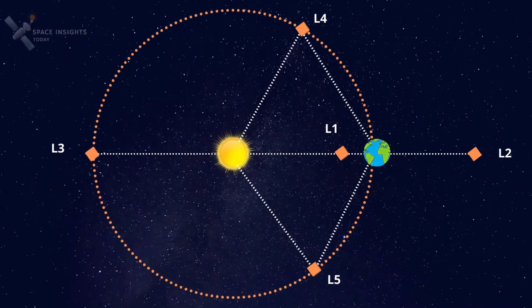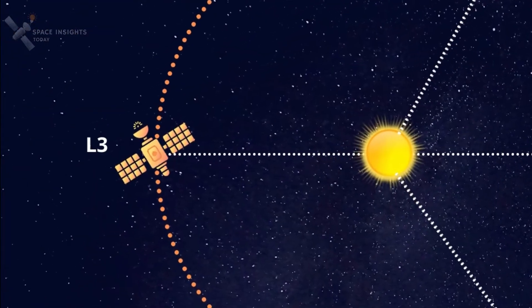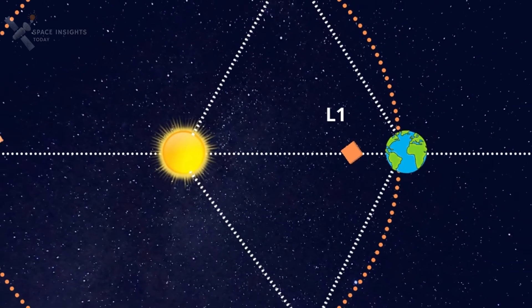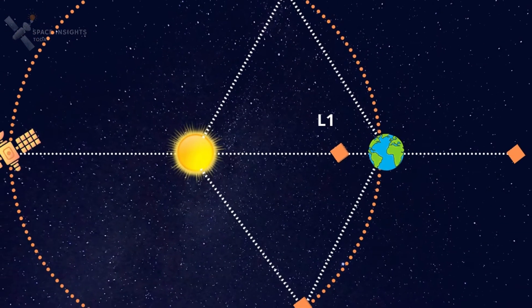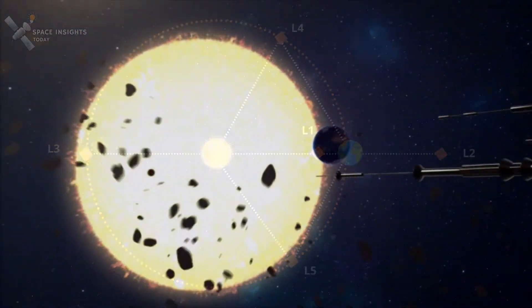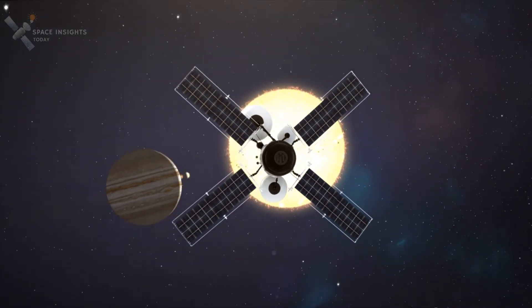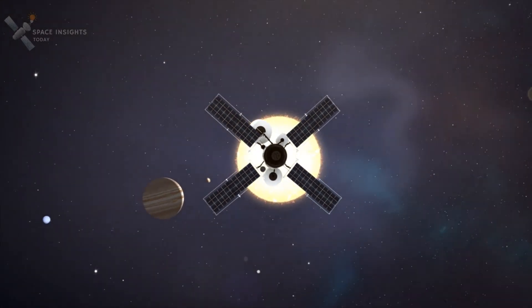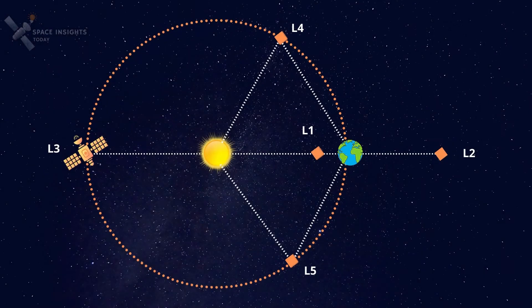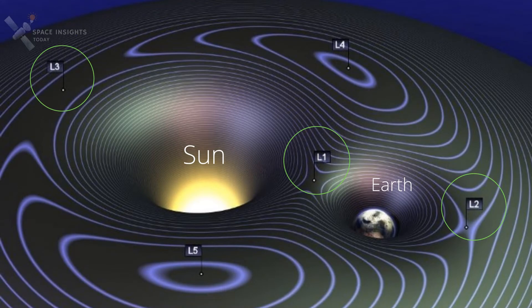The L3 point lies on the line defined by the two large masses, beyond the larger of the two. In our case it lies behind the Sun, opposite to Earth, just beyond our planet's orbit. The objects in L3 cannot be seen from Earth. Agencies like NASA unlikely to find any use for the L3 point to place any observatory missions, since it remains hidden behind the Sun at all times.